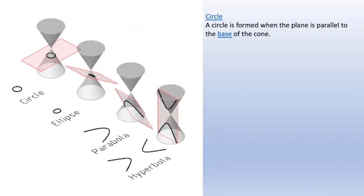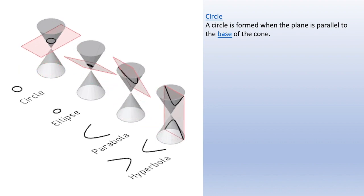The first one is a circle. A circle is formed when the plane is parallel to the base of the cone.